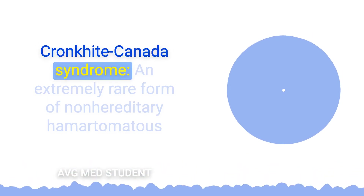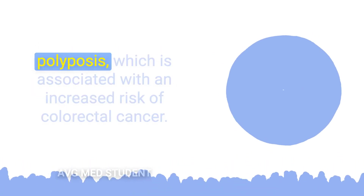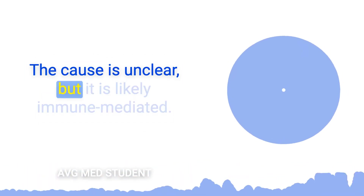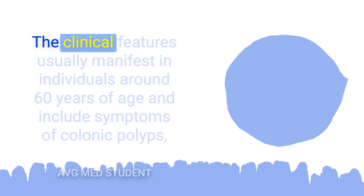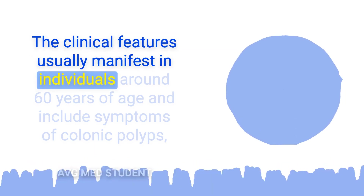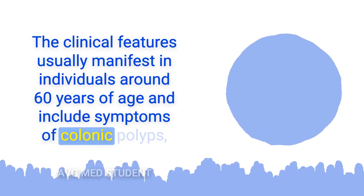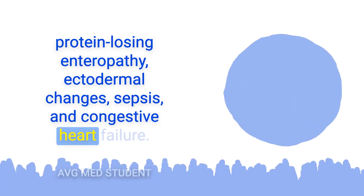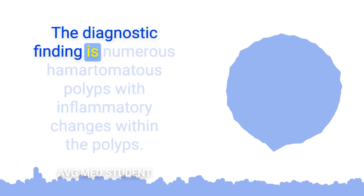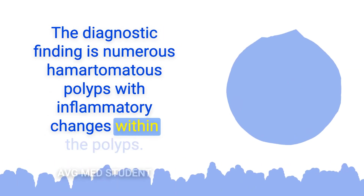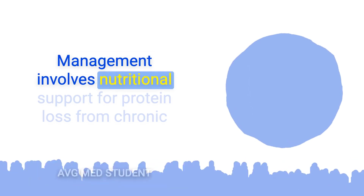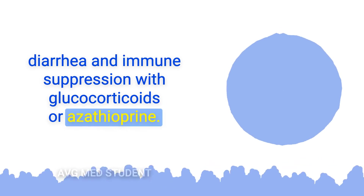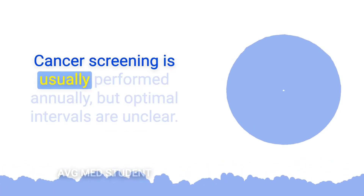Cronkhite-Canada syndrome is an extremely rare form of non-hereditary hamartomatous polyposis associated with an increased risk of colorectal cancer. The cause is unclear but likely immune-mediated. Clinical features usually manifest around 60 years of age and include symptoms of colonic polyps, protein-losing enteropathy, ectodermal changes, sepsis, and congestive heart failure. The diagnostic finding is numerous hamartomatous polyps with inflammatory changes. Management involves nutritional support for protein loss from chronic diarrhea and immune suppression with glucocorticoids or azathioprine, and cancer screening is usually performed annually.